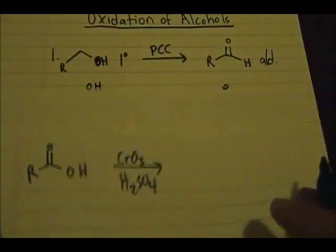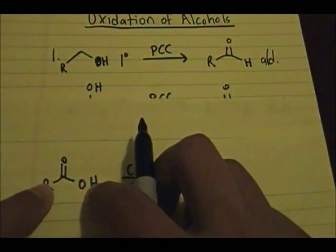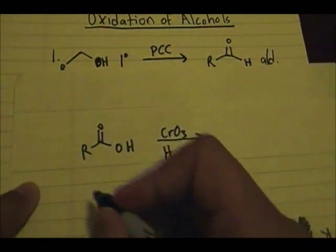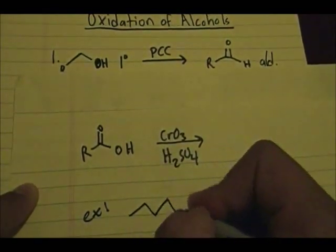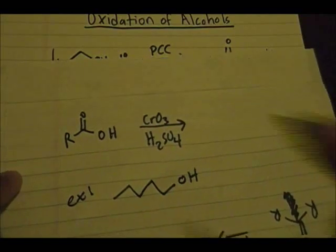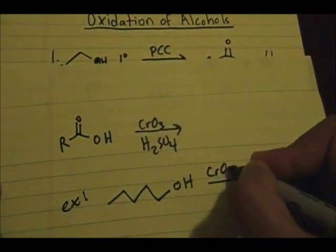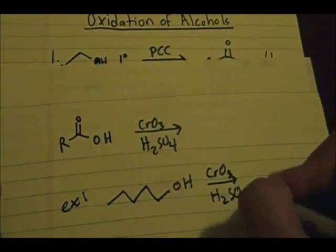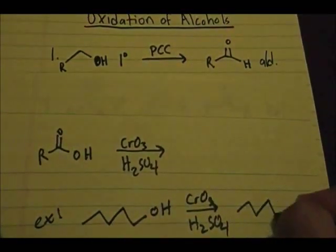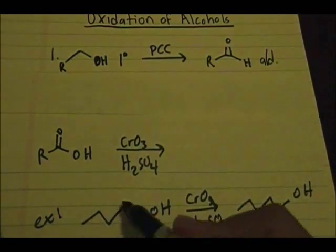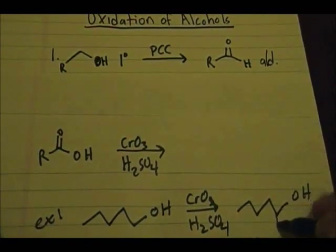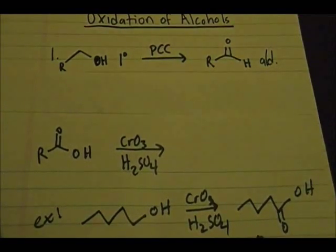Just draw a double bonded O on the carbon that's attached to the alcohol, and there you have it. For example, if you have this alcohol — it's primary — and you use CrO3 and H2SO4, the product will be a 1-2-3-4-5 carbon chain, and on the carbon directly attached to the oxygen I form a double bond to O. There you have it, it's simple like that.